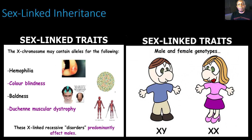Let's look at more information on sex-linked inheritance. The X chromosome may contain alleles for hemophilia, colorblindness, baldness, or muscular dystrophy. These X-linked recessive disorders predominantly affect males. A female has an additional X chromosome to mask or cover that trait, making her more likely to be a carrier. But a male only has one X chromosome, so if the mother carries that trait on her X chromosome and has a son, the son will inherit that trait and have the condition because he has no additional X to mask it.